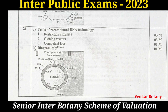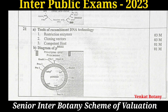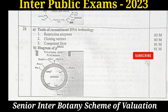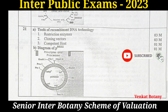Question 21: Give a brief account of the tools of recombinant DNA technology. The tools are: restriction enzymes (3 marks), cloning vectors (3 marks), and competent host (1 mark), total 7 marks. Also draw a diagram of pBR322 plasmid for 1 mark, making total 8 marks.